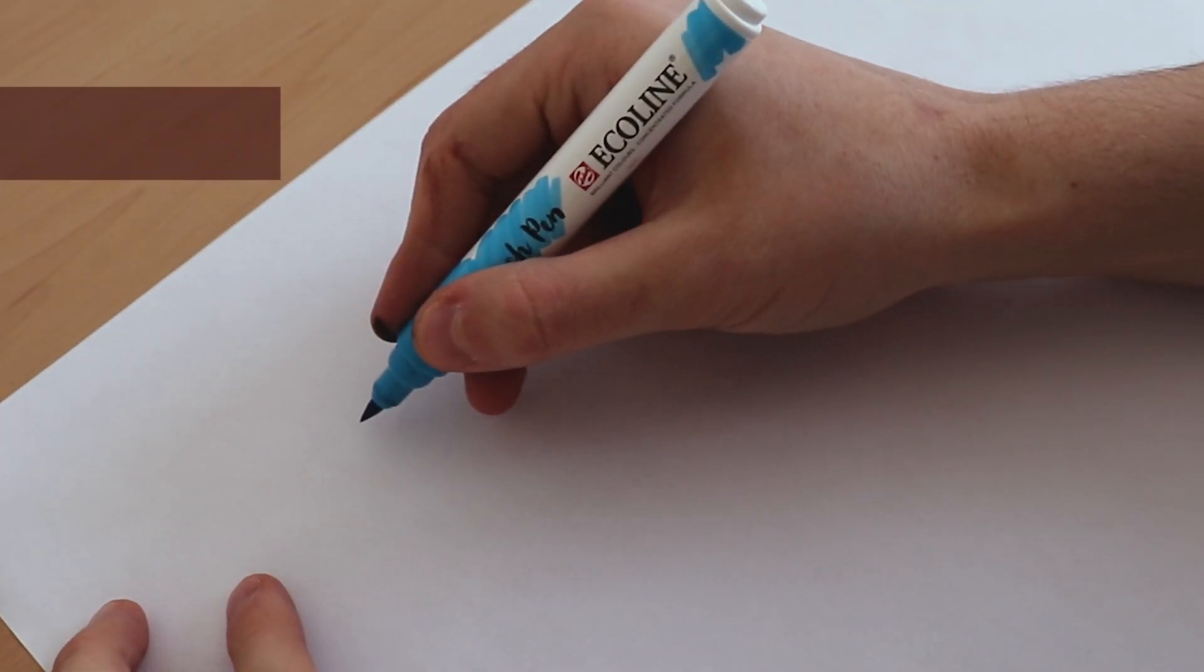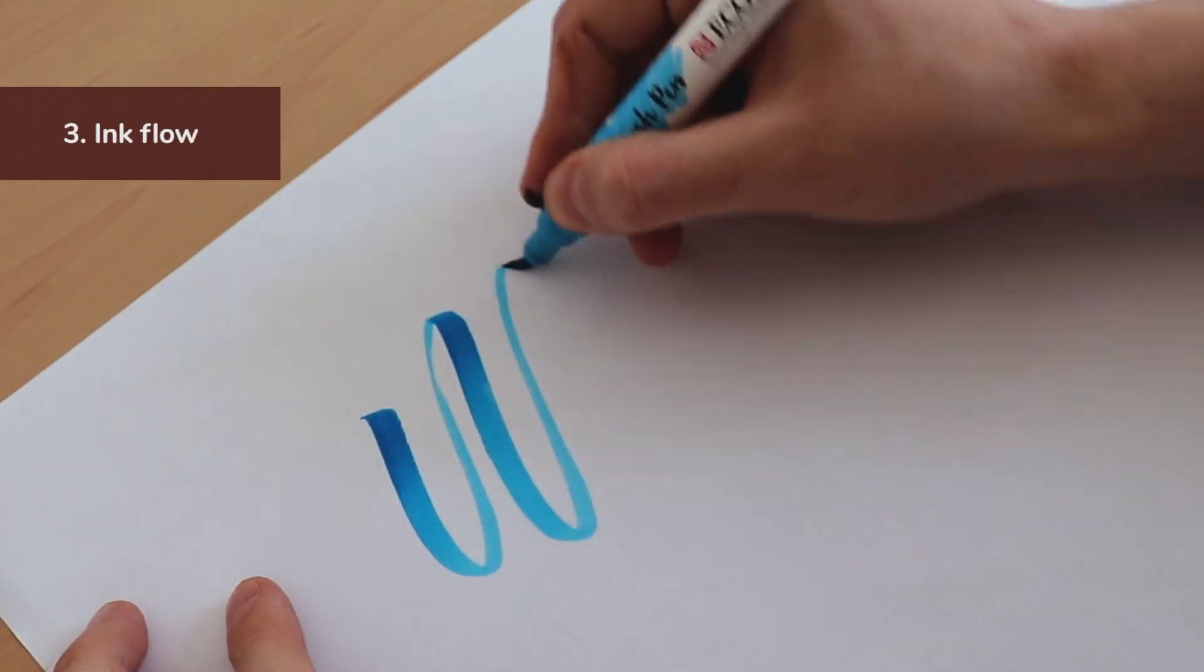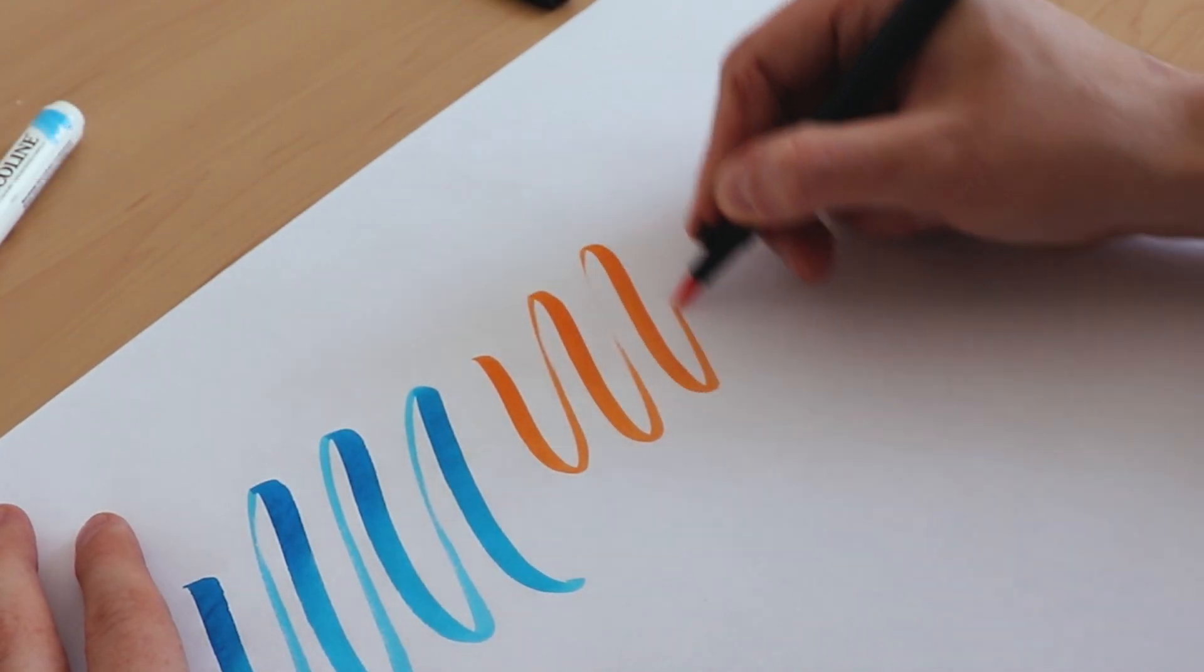Then we have ink flow. A brush pen can have a heavy, medium or dry ink flow.